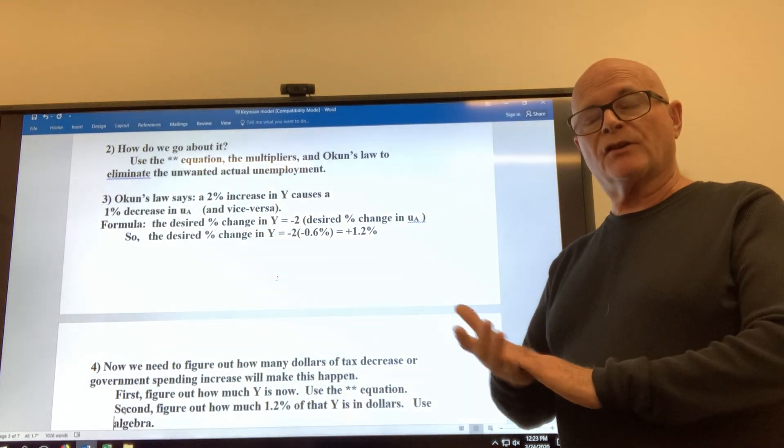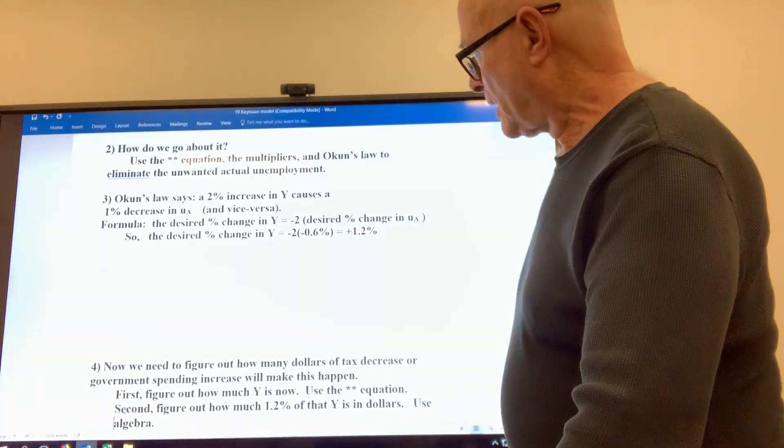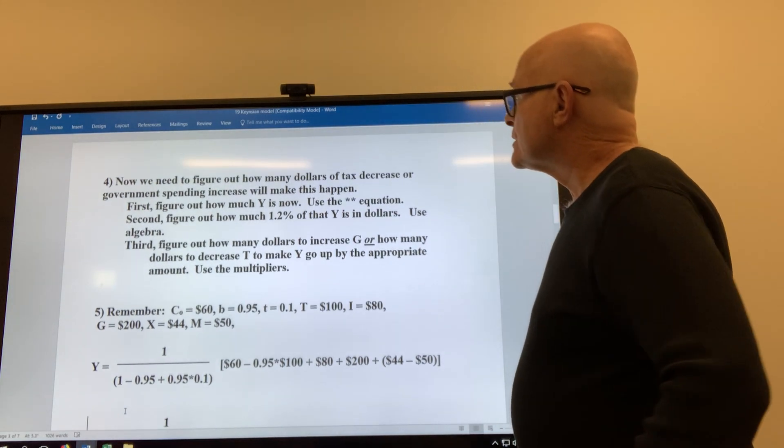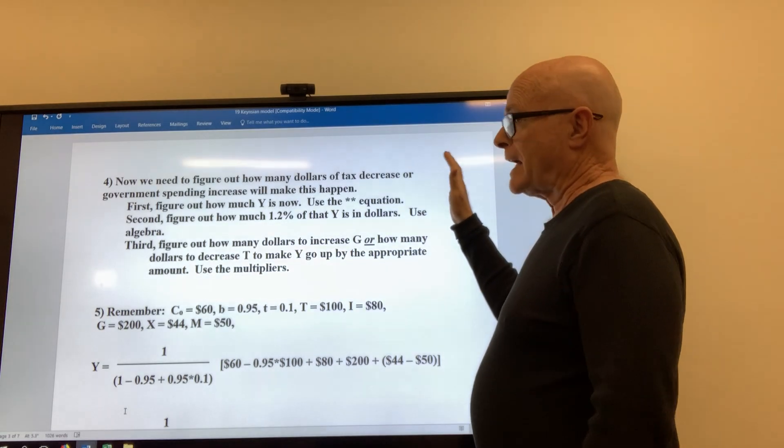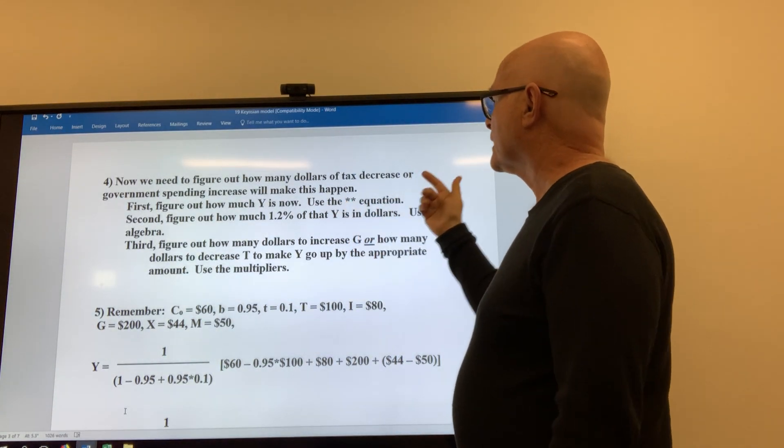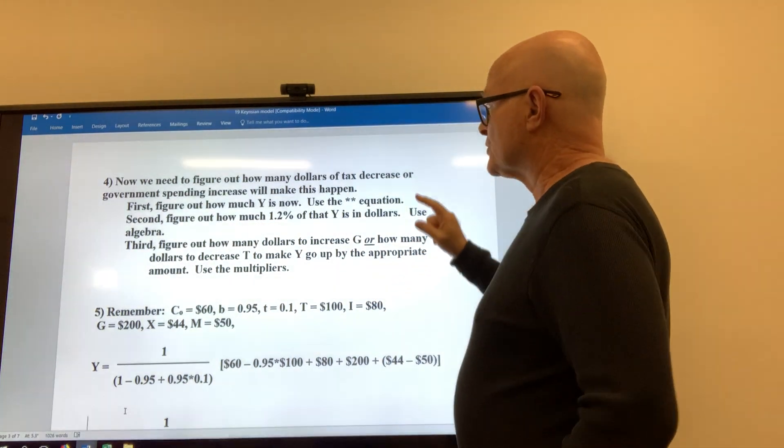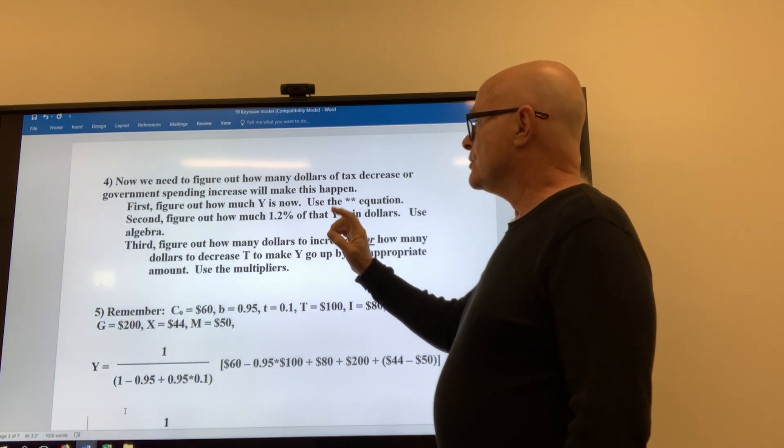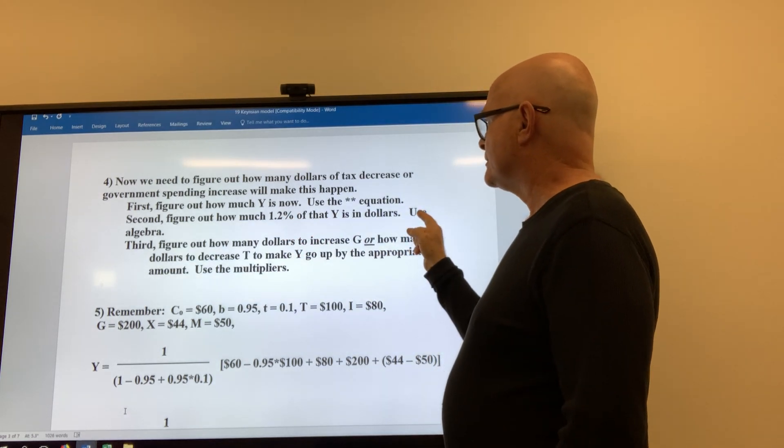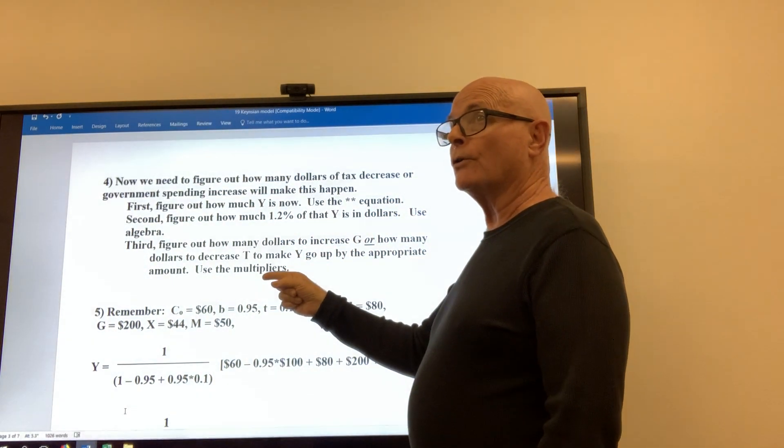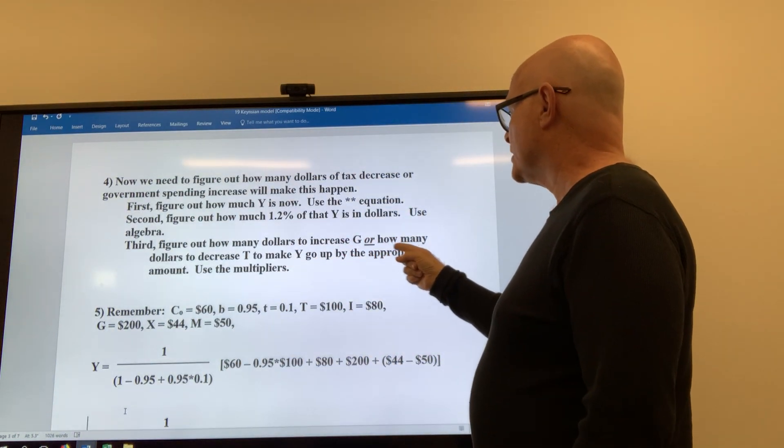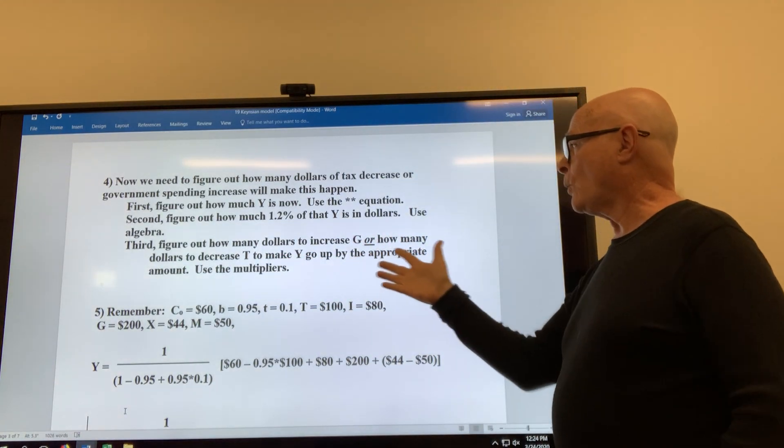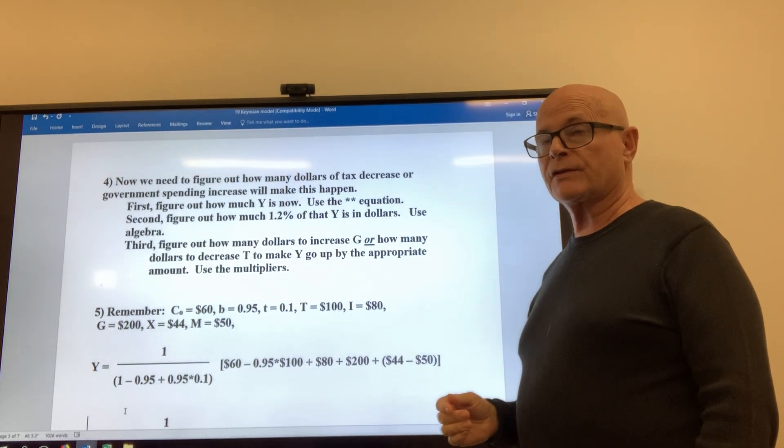Okay, 1.2 percent increase in GDP. How many dollars is that? So now we need to figure out how many dollars of tax cut or increase in government spending will make this happen. So the first thing we do is we're going to solve for what GDP is now. You use the double star equation for that. Then you figure out what 1.2 percent of that is in dollars. And then third, you figure out how many dollars to increase government spending or how many dollars to decrease taxes to make Y go up by the appropriate amount. So you use the multipliers for that.